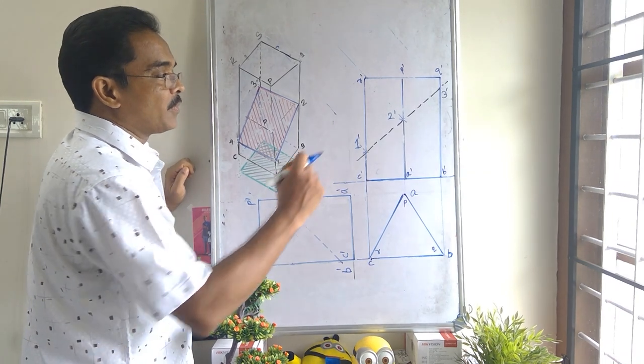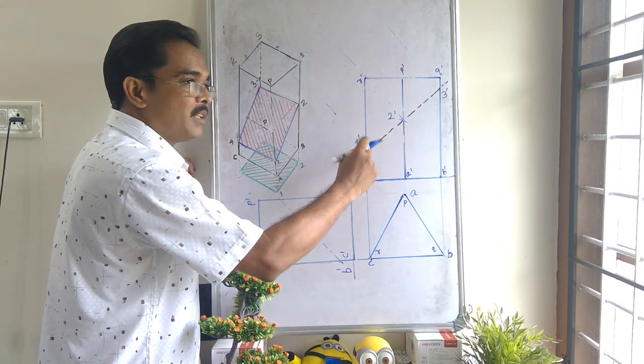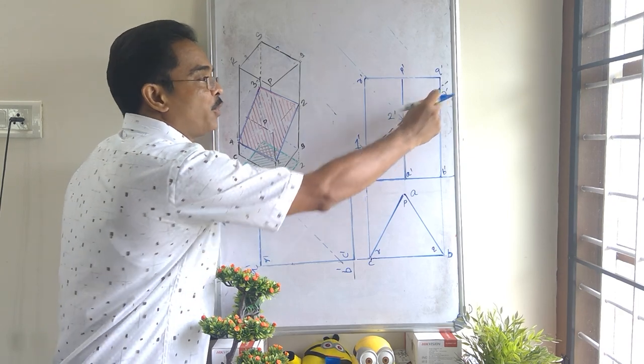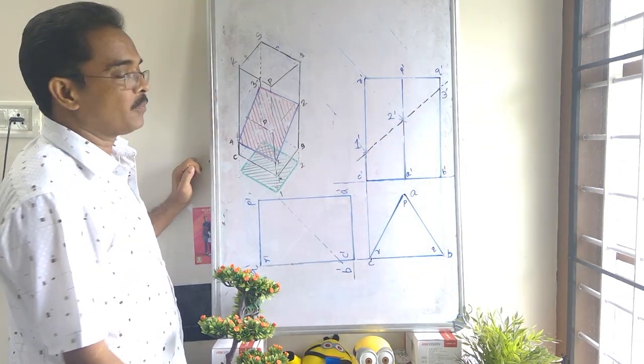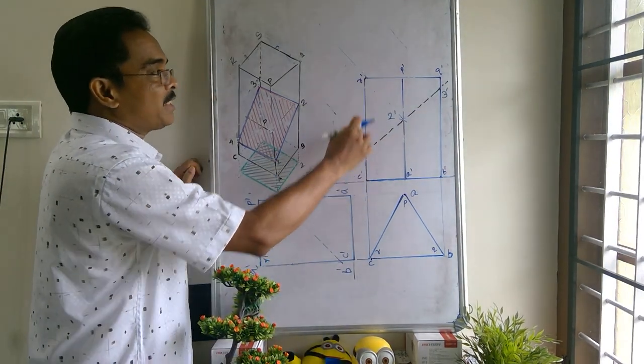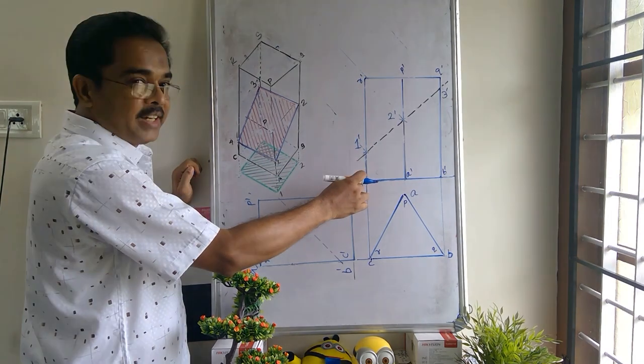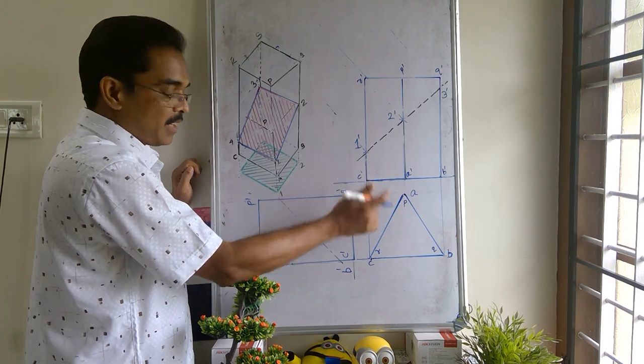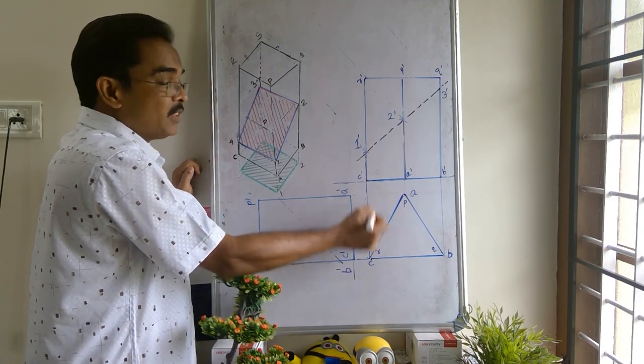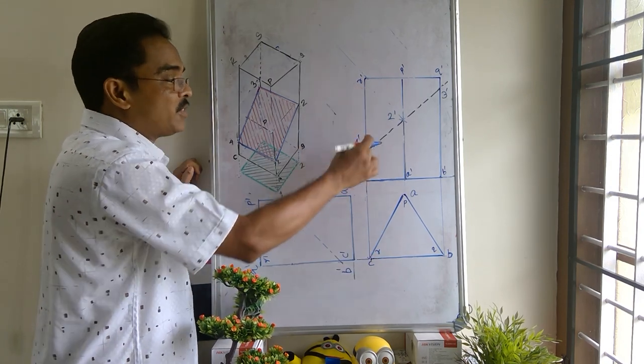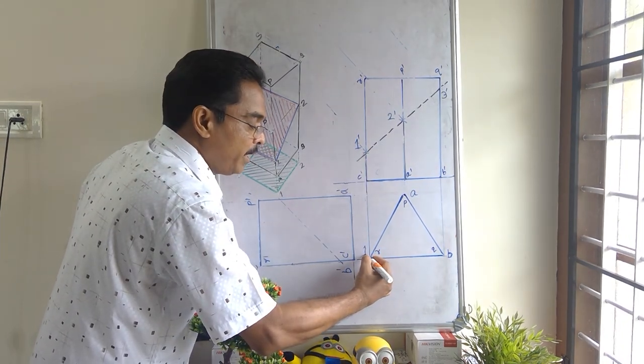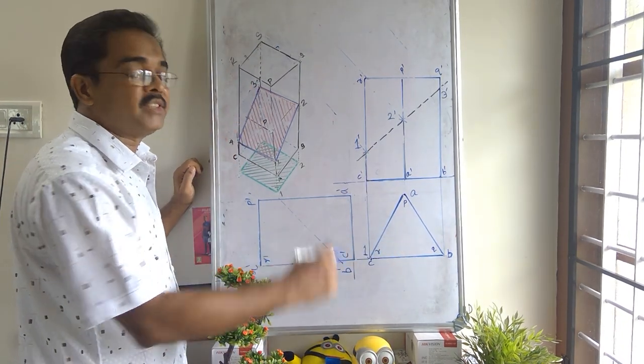After that, you find the, the third step is after that, find the top view of these cutting points. Since one dash is along the line C dash R dash, so the top view of the point C dash R dash is here. Since one dash is also along this line, the top view of the point one dash will be along with C and R.